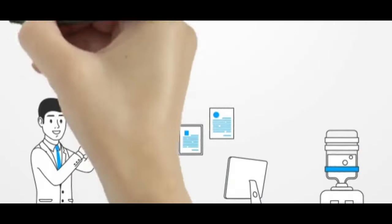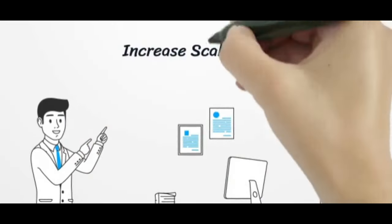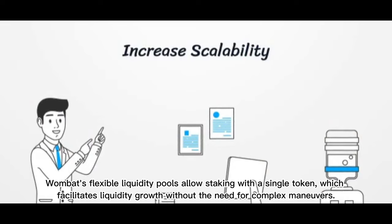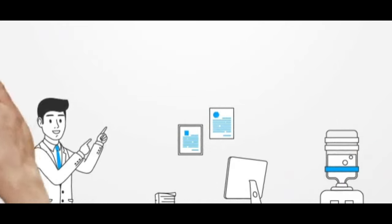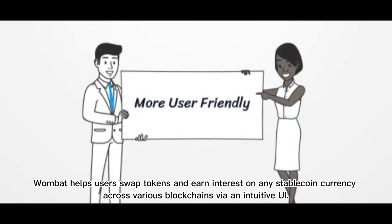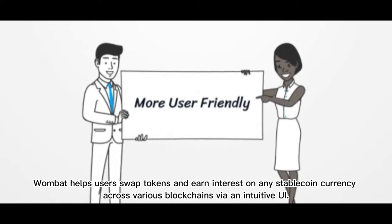Increase Scalability: Wombat's flexible liquidity pools allow staking with a single token, which facilitates liquidity growth without the need for complex maneuvers. More User-Friendly: Wombat helps users swap tokens and earn interest on any stablecoin currency across various blockchains via an intuitive UI.